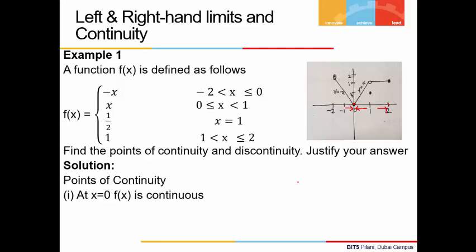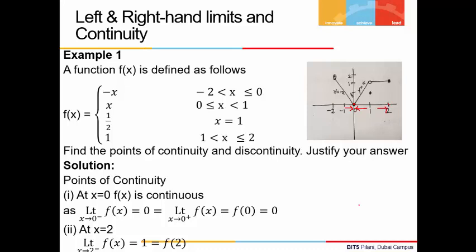If we are asked to find the points of continuity and discontinuity, let's check x = 0 first. Approaching x = 0 from the left, the function moves towards 0. Approaching from the right, the function also approaches 0. So the limit from the left and the limit from the right are both equal to 0. The value of the function at 0 is also 0. All three conditions are satisfied, so the function is continuous at x = 0.